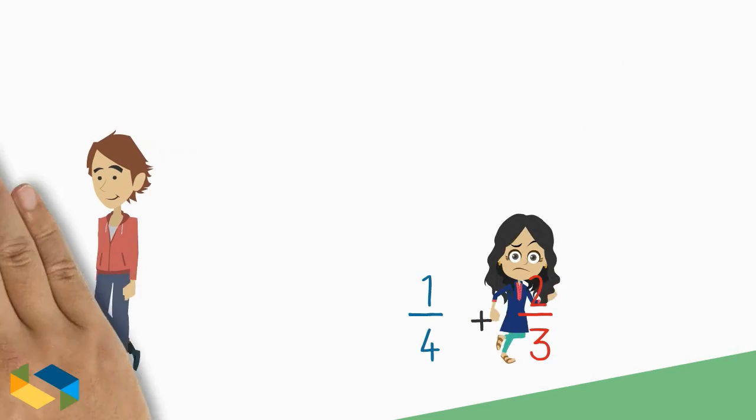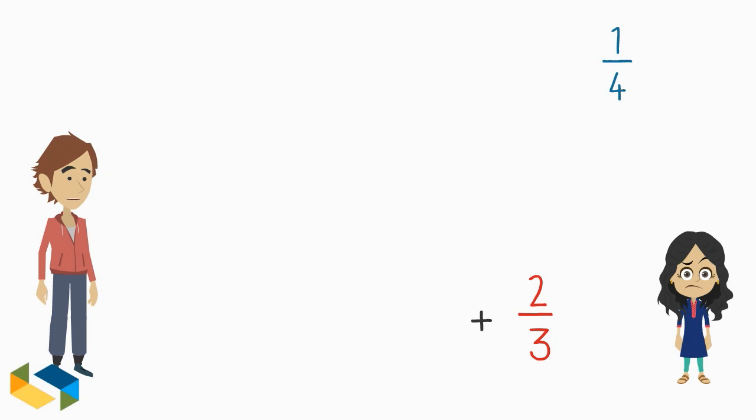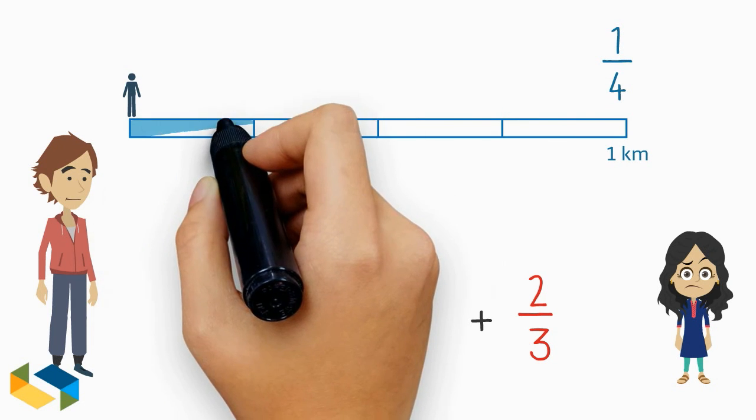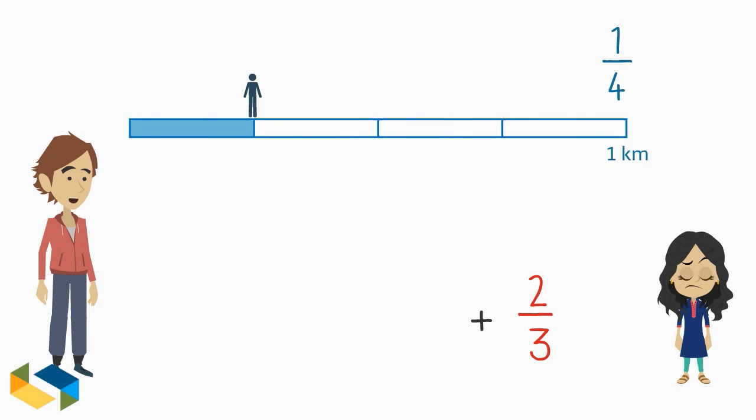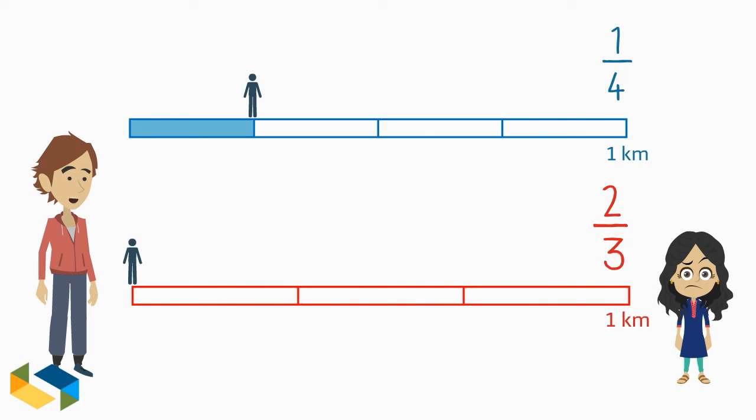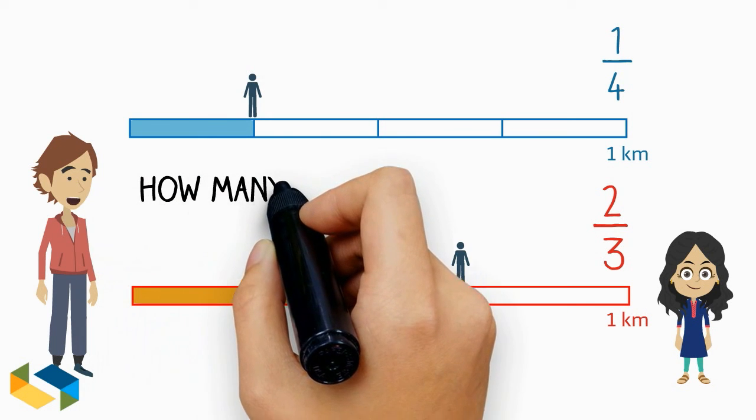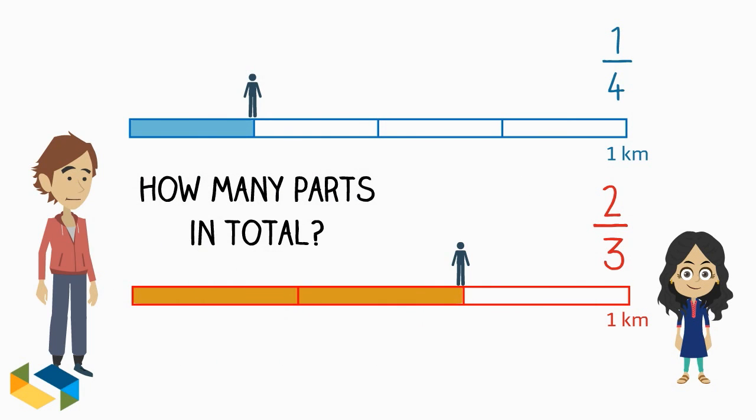One-fourth of a kilometer means I covered one out of four parts of a kilometer, while two-thirds means I ran two out of three parts of a kilometer. We have to find out how many parts in all I ran.